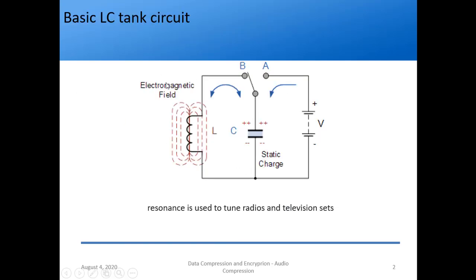Before starting, let's look at the basic LC tank circuit shown on the left. First, we connect the capacitor only to the voltage source until it gets completely charged. Then we switch from A to B so that the voltage source is not in the circuit and only L and C are in the circuit.